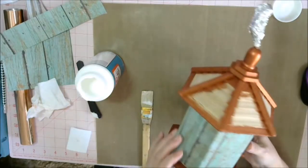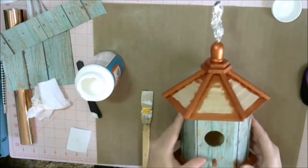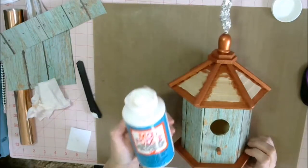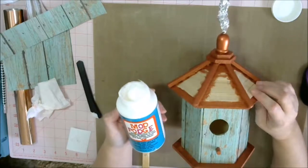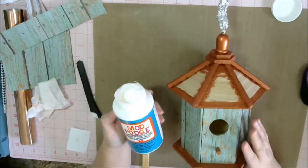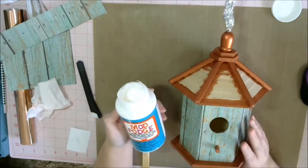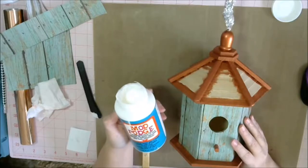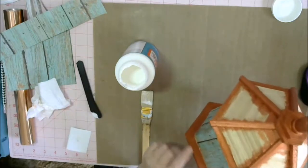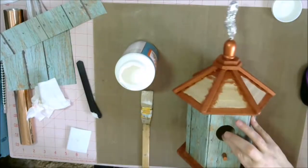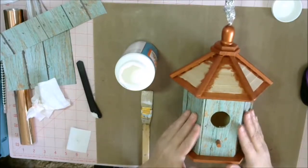Now that I have the paper decoupaged onto the birdhouse, I'm going to go over it with a couple more coats of the Mod Podge and let that dry in between each coat. And that is to make sure that we have a good seal between the paper and the elements once we put it outside, because I will be using this outside. And I am going to go ahead and seal the exposed wood as well.